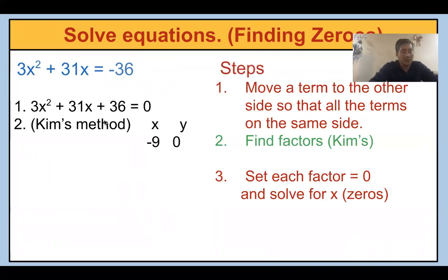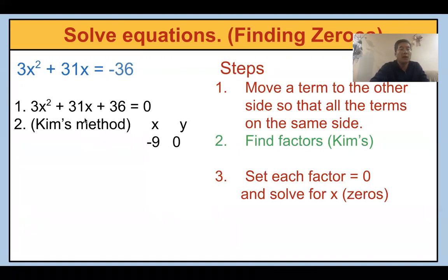Then you factor this. I recommend Kim's method. Because if you want to factor the regular way, you would use the AC method — if you can do it, please try — but mostly I recommend Kim's method. You put the function in the calculator and find one zero. If you look at the table, it says y equals zero when x is negative nine.